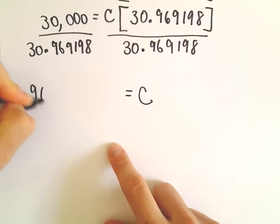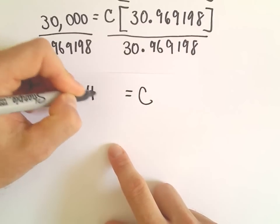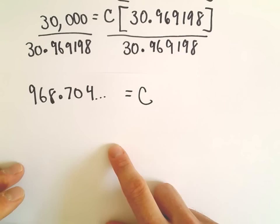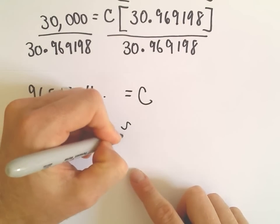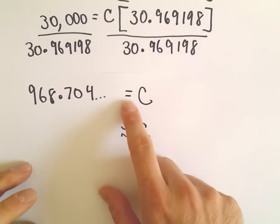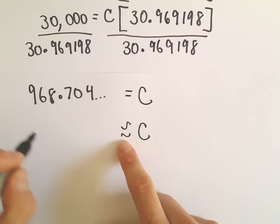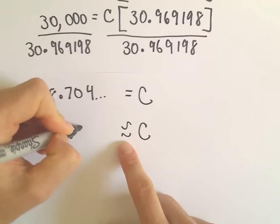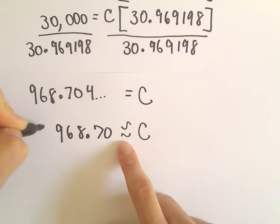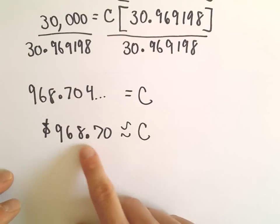And when I do 30,000 divided by 30.969198, I'm getting this to be 968.704 and then some other stuff. So since we're talking about money, I'm going to round this to the nearest penny. The little curly equal sign means approximately equal to. I probably should have used those earlier on as well. But it says roughly you're going to have to put in $968.70.